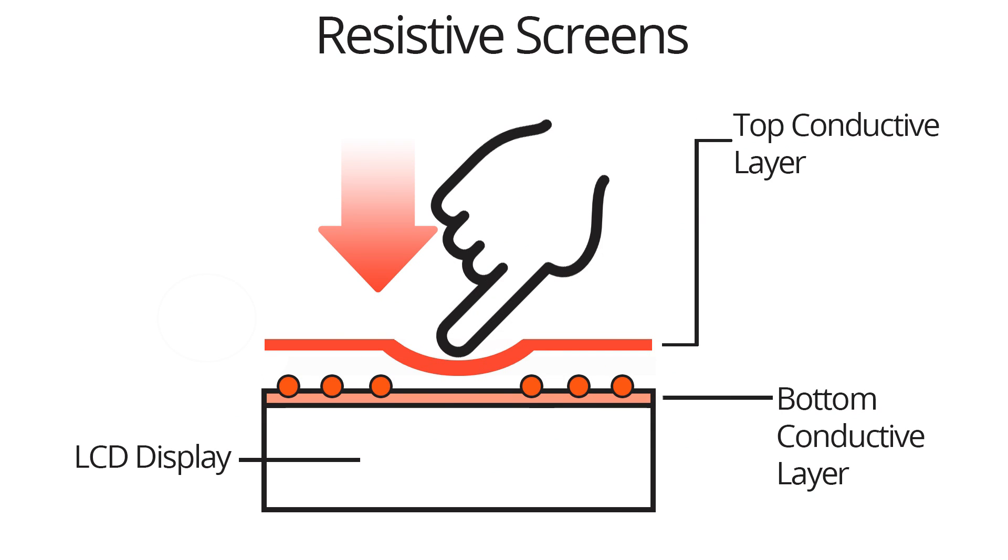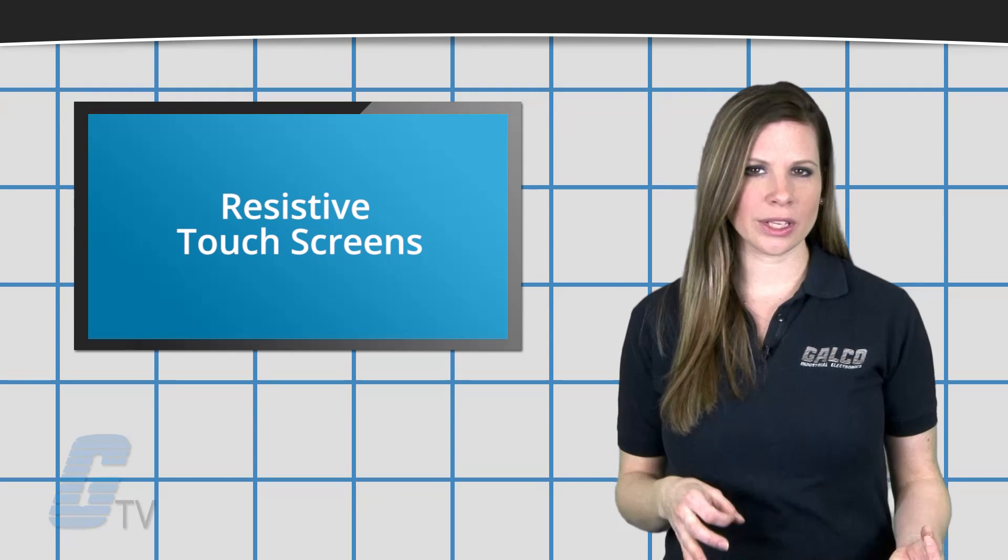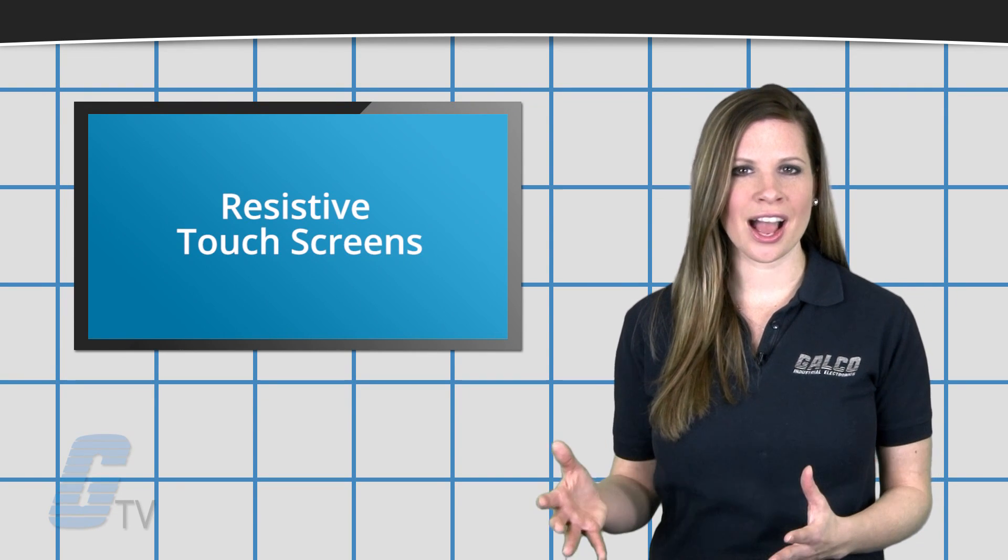Upon applying pressure to the top sheet of a resistive display, it flexes inward towards the second sheet. When they come into contact with each other, a circuit completes. Because these displays only need pressure to register a touch,